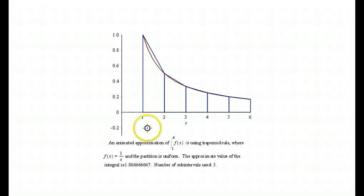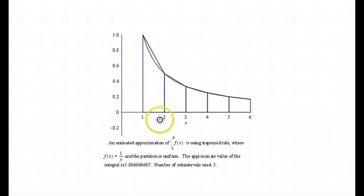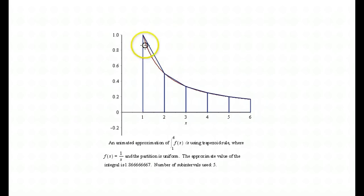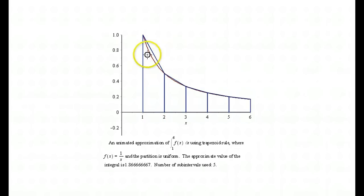You obtain the trapezoids by looking at your partition — here using the function 1 over x with 5 subintervals over the interval from 1 to 6. Instead of using just one of the left, right, or midpoints from each subinterval, you take both the left and the right endpoints, look at the points on the graph of the function there, connect them by a straight line segment, and then compute the area of the trapezoid formed by the subinterval and those two points on the graph. You do that for every subinterval.